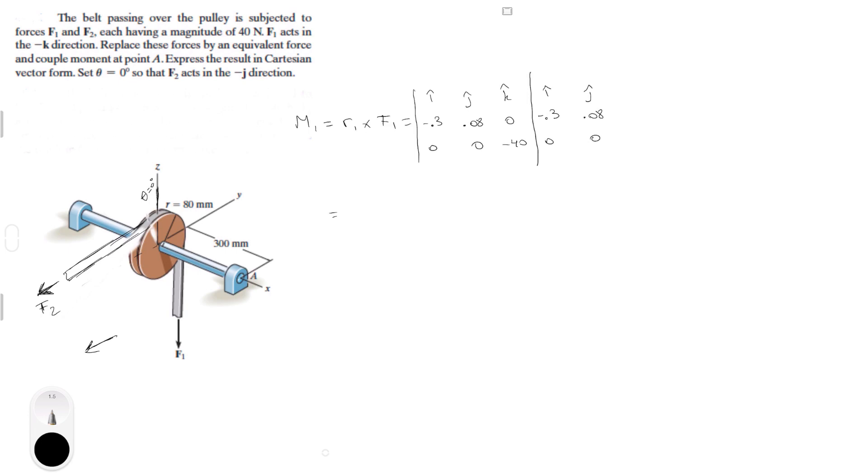Let me put the equals right here, and we're going to do our positive diagonals first. So this times that times that is minus 3.2i, j times 0 times 0, 0 and k times minus 0.3 times 0, 0. So it's nothing, negative diagonals, 0 times 0.8 times k is 0, 0 times 0 times i is 0, minus, minus, minus times, minus 40 times, minus 0.3. So that's three negatives which make up a negative, that would be minus 12 in the j. So that is the moment being created by F1 along A.